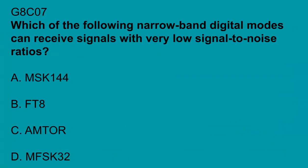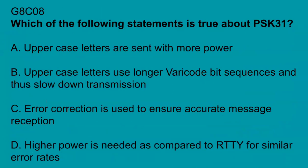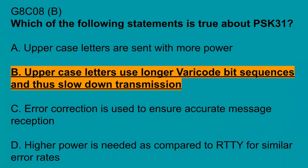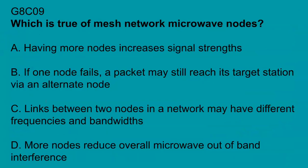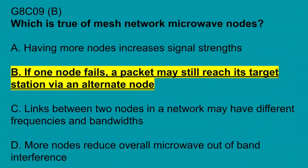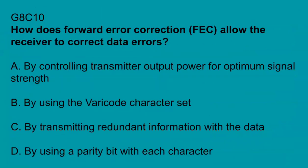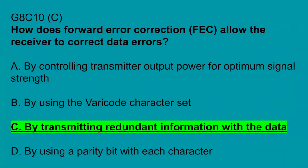G8C07: Which of the following narrowband digital modes can receive signals with very low signal-to-noise ratios? FT8. G8C08: Which of the following statements is true about PSK31? Uppercase letters use longer varicode bit sequences and thus slow down transmissions. G8C09: What is true of mesh network microwave nodes? If one node fails, a packet may still reach its target station via an alternative node. G8C10: How does forward error correction allow the receiver to correct data errors? By transmitting redundant information with the data.